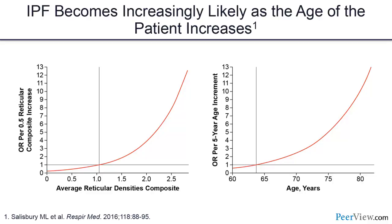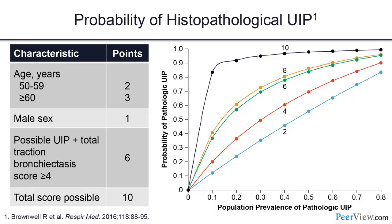The San Francisco group developed a scoring system where age is a key component, along with male sex and a bronchiectasis score. Each lobe is scored zero to four, and when you have traction bronchiectasis in multiple lobes in an older male patient, the probability of UIP rises significantly. These are evolving areas — we may become more comfortable calling possible UIP with certain demographics as IPF without surgical biopsy.